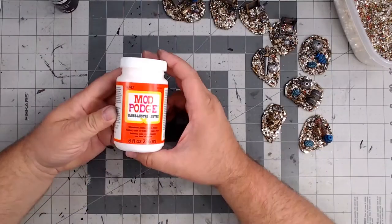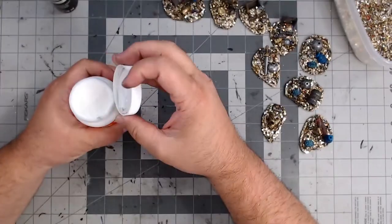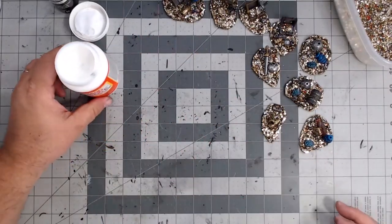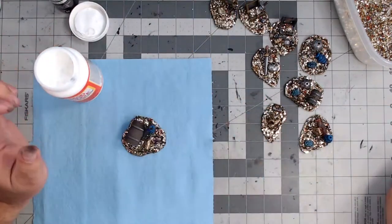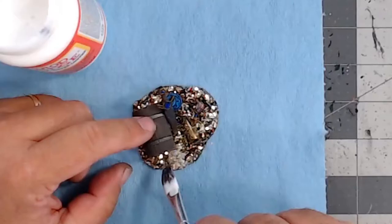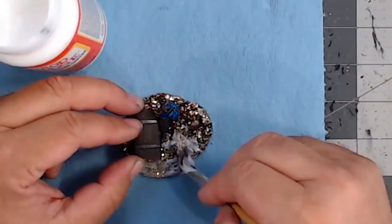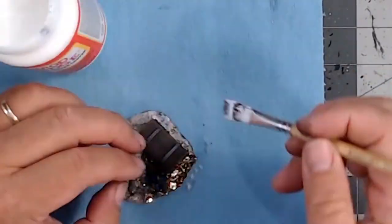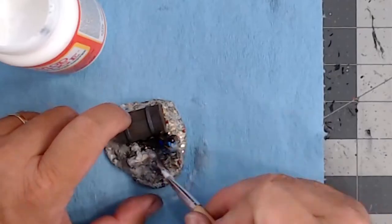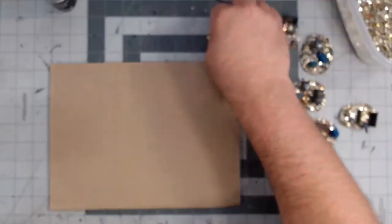Now here I'm initially trying this Mod Podge that you would apply with a brush. Again, placing the paper towel down and just dabbing it into all the nooks and crannies. However, I found that this actually gave it a muddy look and I just wasn't happy with the final product on this, so after this I switched to a spray on Mod Podge.